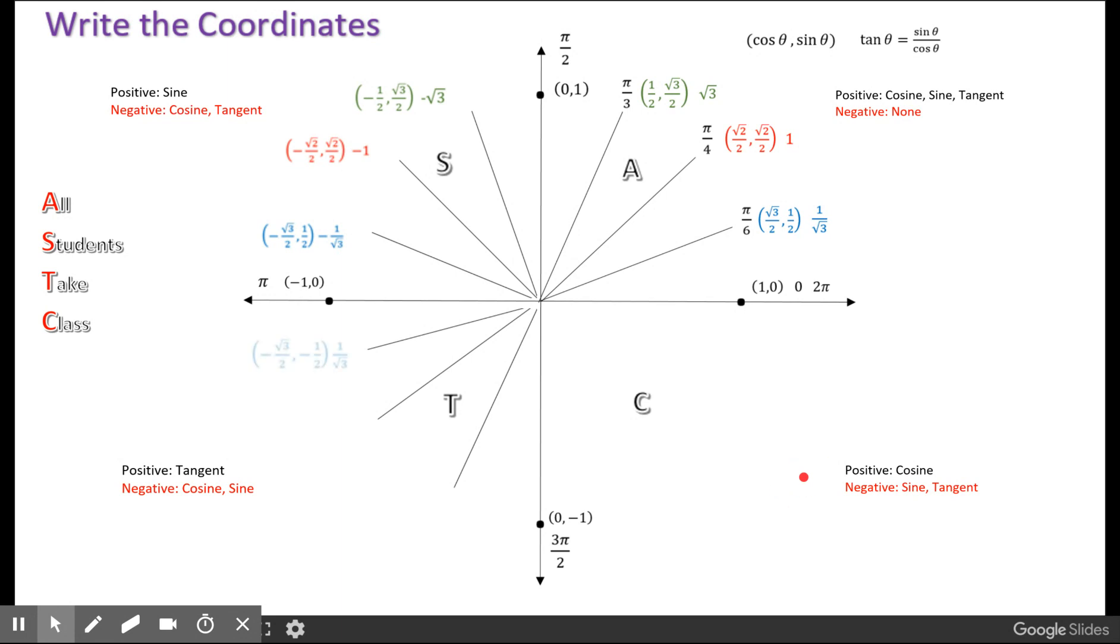In the third quadrant, only the tangent is going to be positive, and in the fourth quadrant, only the cosine is positive.